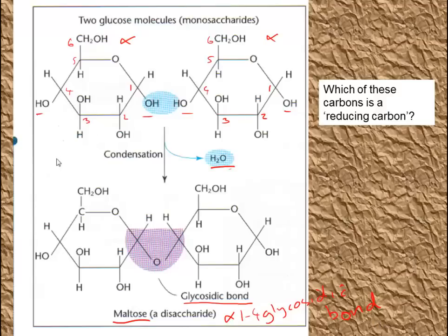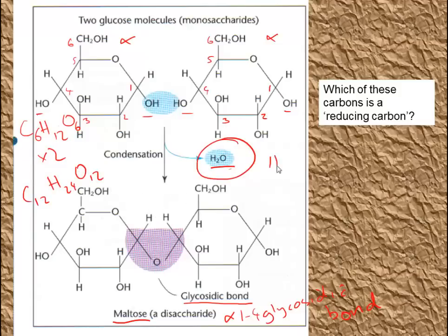Consider the formulae that result. Glucose is C6H12O6, so two glucoses give C12H24O12. But we've lost one H2O in the condensation, so our disaccharide is always C12H22O11. You can continue this — for each glycosidic bond formed, you remove one H2O from the formula. So for a trimer of hexose sugars, you'd triple C6H12O6 and then remove two H2Os, because two glycosidic bonds are formed.